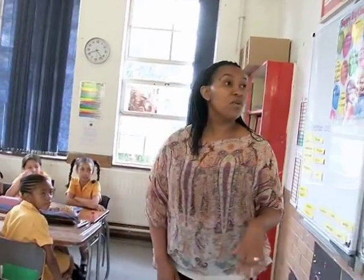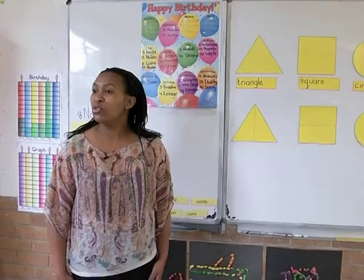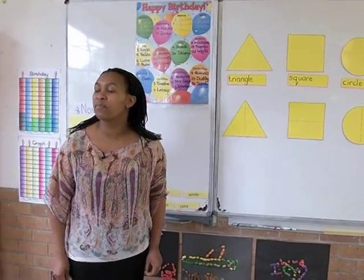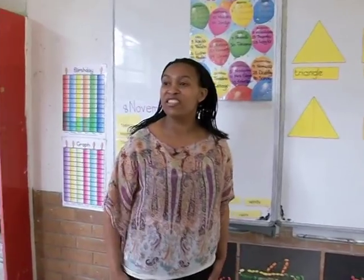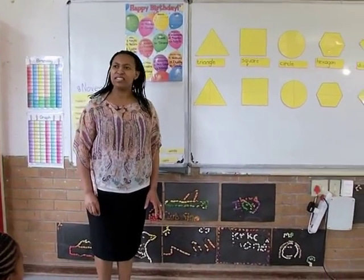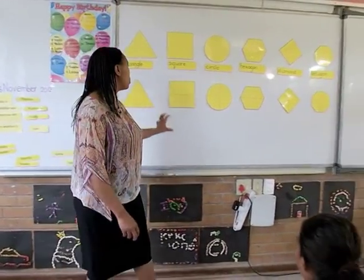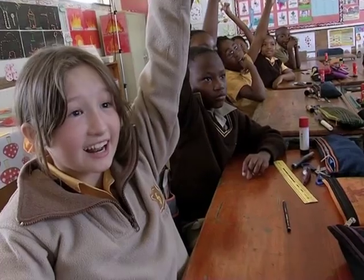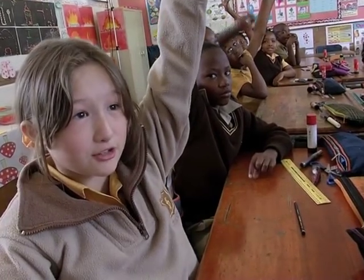Grade 3s, I'm going to put another set of shapes on the board and I want you to look at them carefully. What do you notice about these shapes? They're all divided into halves. We took the shapes we had just discussed and introduced the concept of symmetry with a halving line. This dotted line has a special name — it's a line of symmetry.